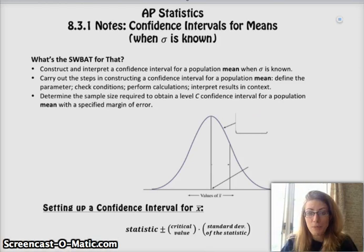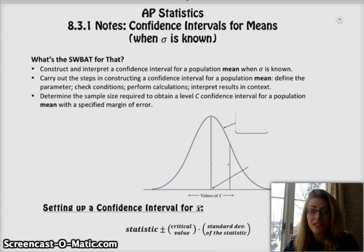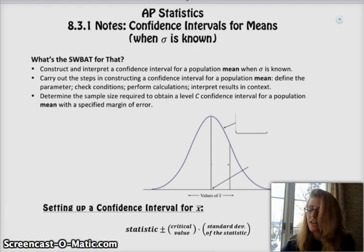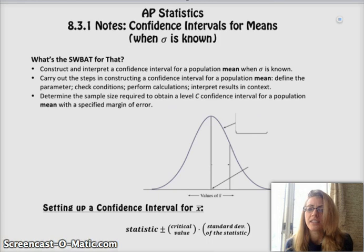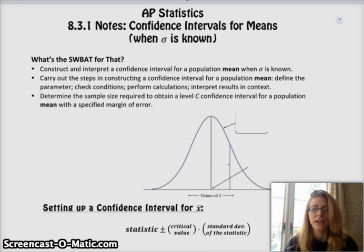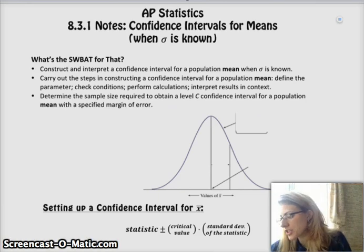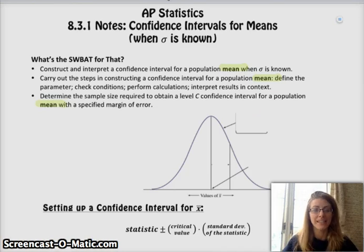One thing I'd like you to notice is that our SWABAT for today is really similar to 8.2, which was confidence intervals for proportions. I literally took the SWABAT from proportions, deleted a few things we don't need to relearn, and then changed anywhere it said proportion to mean. We're going to construct and interpret a confidence interval for a population mean when sigma's known, carry out the steps, check conditions, and determine the sample size required with a specified margin of error. Hopefully you'll just get better at it.